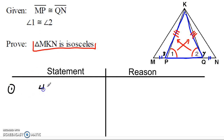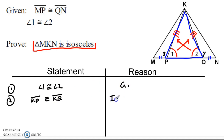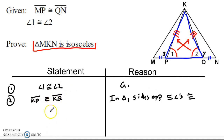Let's write it up in a proof. I'll start with angle 1 is congruent to angle 2 — that's given. Then I can say KP is congruent to KQ, because in a triangle, sides opposite congruent angles are congruent. That gives me a pair of sides in my triangles. I also know that MP is congruent to QN — that was also given — and that's another pair of sides.